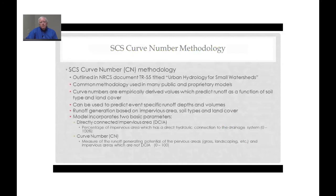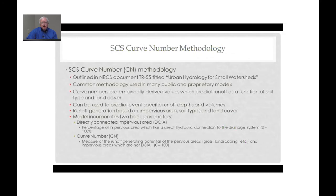The SCS curve number methodology is outlined in the NRCS document TR-55, called Urban Hydrology for Small Watersheds. It's a very common model used in many public and proprietary models, and the curve numbers themselves reflect rainfall-runoff relationships as a function of soil type and soil cover.